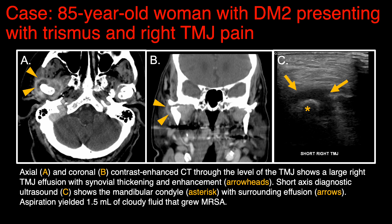We'll start with an 85-year-old woman with type 2 diabetes who presented clinically with right-sided TMJ symptoms including pain and trismus. On contrast-enhanced CT in both the axial and coronal plane, there is a right-sided temporomandibular joint effusion. The synovium is thickened and enhancing. On short axis ultrasound, on the image on the far right, we can see the echogenic mandibular condyle — indicated by the asterisks — surrounded by the hypoechoic joint effusion indicated by the orange arrows. This patient underwent aspiration yielding 1.5 milliliters of fluid, which was positive on culture for methicillin-resistant Staph aureus.